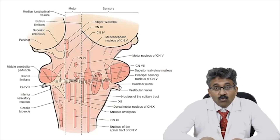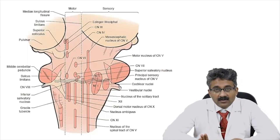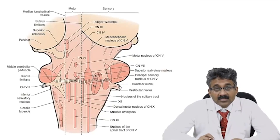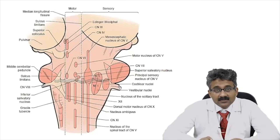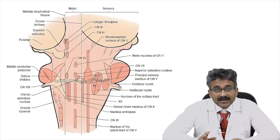There are four lateral tracts — the four S's. Which are the four S's? The spinocerebellar tract, the sympathetic chain, the lateral spinothalamic tract, and the spinal nucleus of the trigeminal nerve. These four S structures are laterally situated in the brainstem.